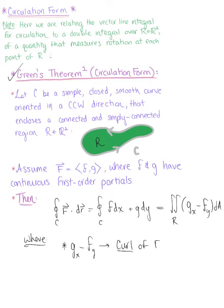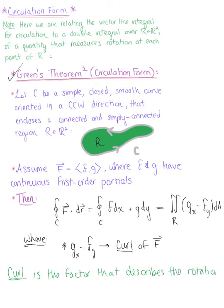The integrand of our double integral — the partial derivative of G with respect to x minus the partial derivative of F with respect to y — is called the curl. The curl is a factor that describes the rotation of the vector field within C, on the region R, that produces the circulation on the curve.